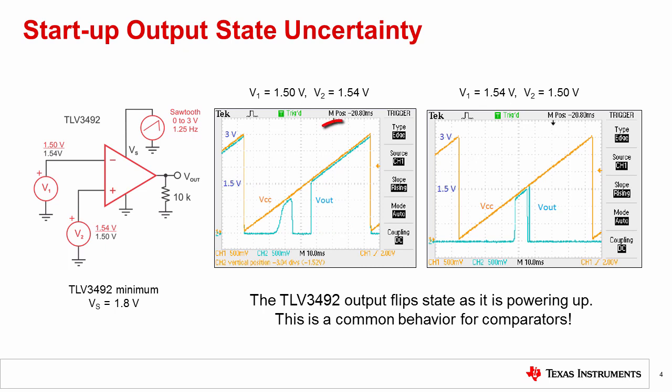After this point, the output of the comparator remains at logic high as expected. Keep in mind that 1.5 volts is actually below the minimum supply requirement of 1.8 volts for the TLV3492.